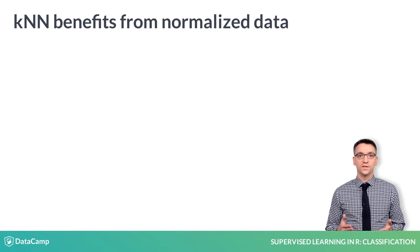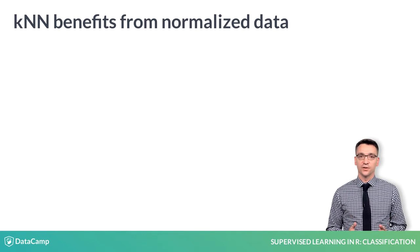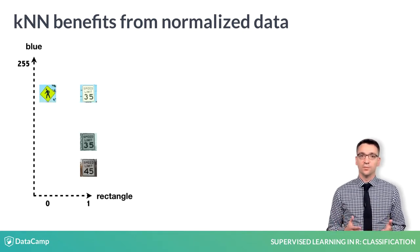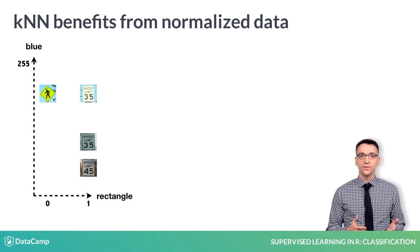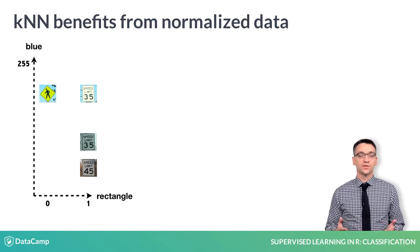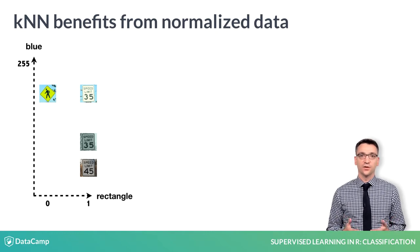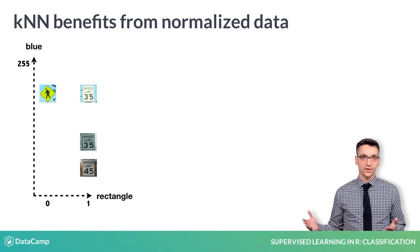Two different shapes may differ by at most one unit, but two different colors may differ by as much as 255 units. Such a different scale allows the features with a wider range to have more influence over the distance calculation, as this figure illustrates.